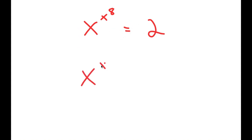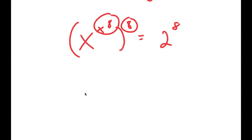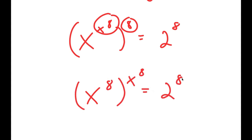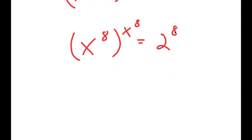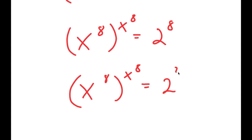Taking the 8th power of both sides gives x to the power of (x^8 × 8) is equal to 2^8. Rearranging, I get x^8 to the power of x^8 is equal to 2^8.